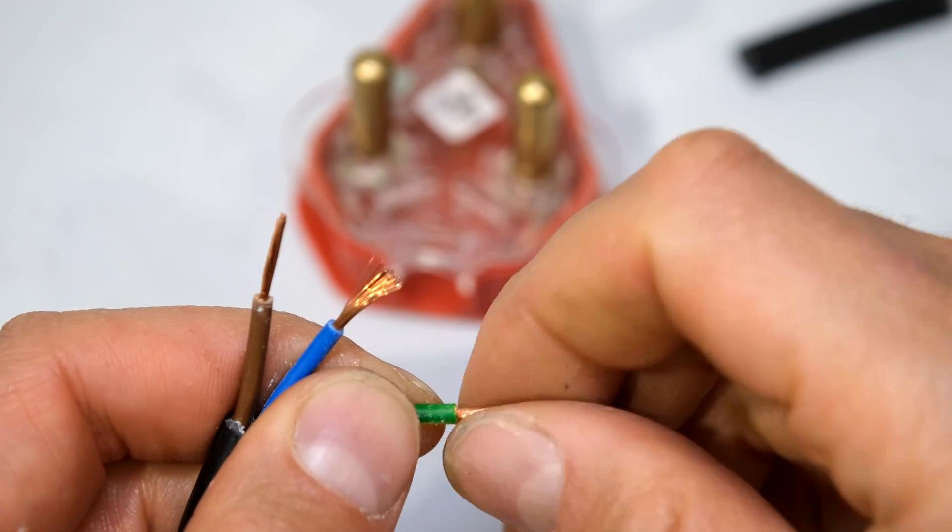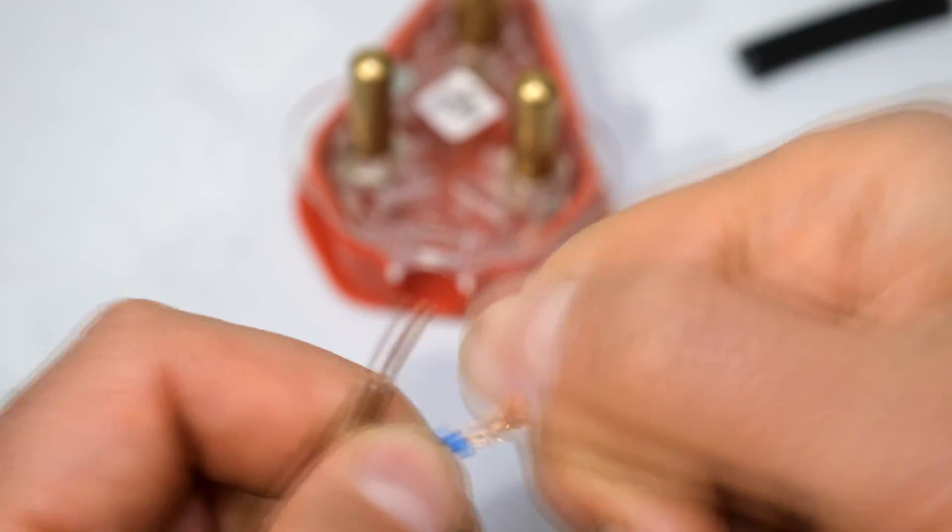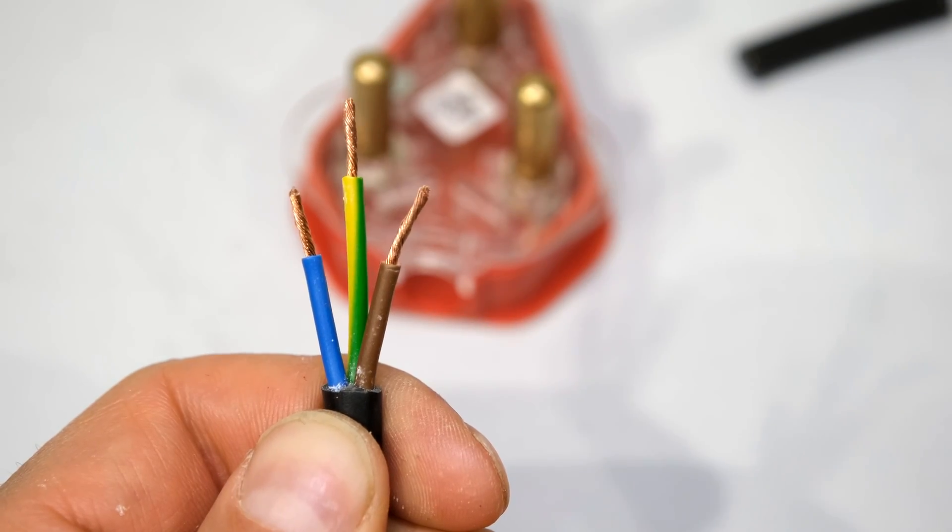Make sure you twist the copper strands. Your wire should now look like that.